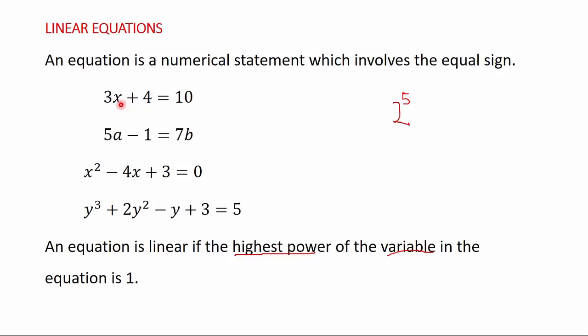So if the highest power of the variable in an equation is 1, the equation is said to be linear. In 3x plus 4 equals 10, the only variable is x and the power of x is 1, which means the highest power of the variable is 1. Therefore this equation is a linear equation.